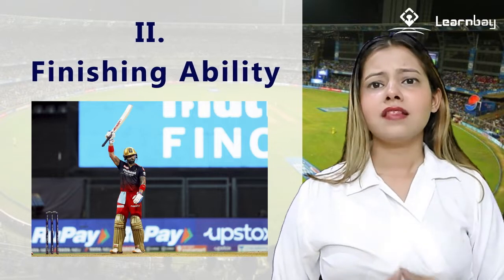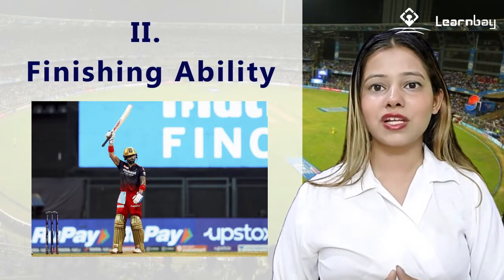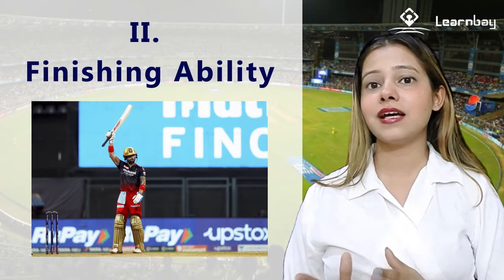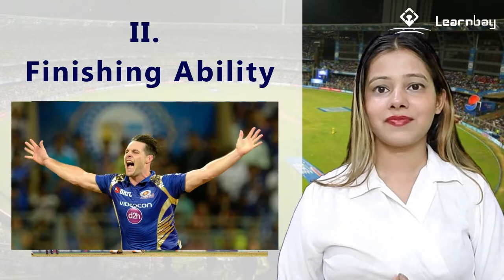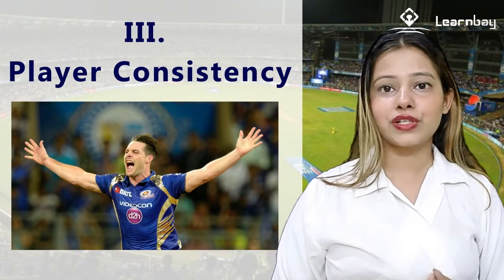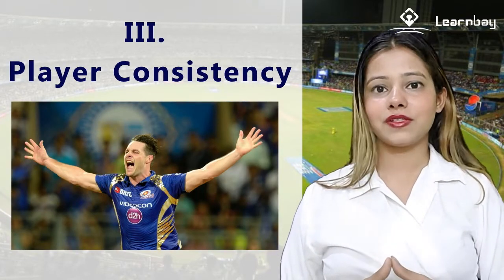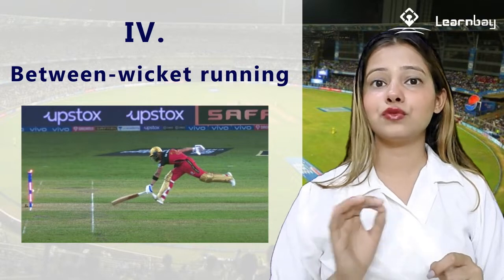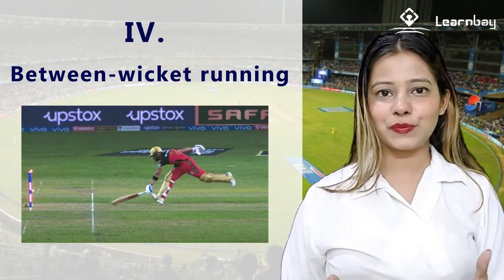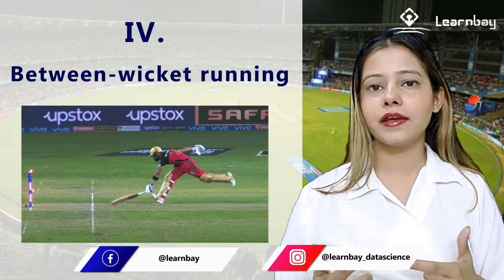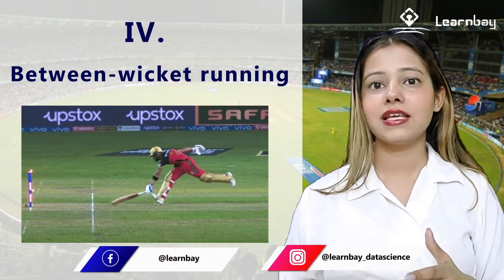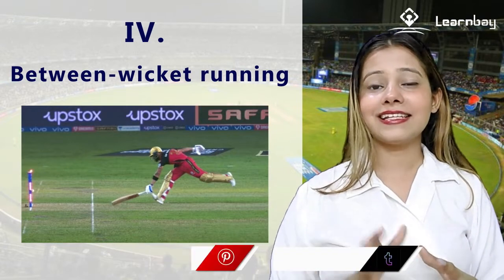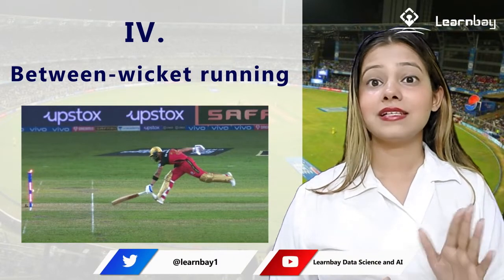2. Finishing Ability: The number of not-out innings divided by the total number of innings played — Finishing Ability = not-out innings / total innings played. 3. Player Consistency: Total runs upon number of dismissals. 4. Between Wicket Running: (Total runs − 4s − 6s) / (total balls played − boundary balls). If this fourth measure is higher than the hard-hitting metric, it indicates the batsman is not strong at hitting boundaries but is good at getting singles, twos, and threes.